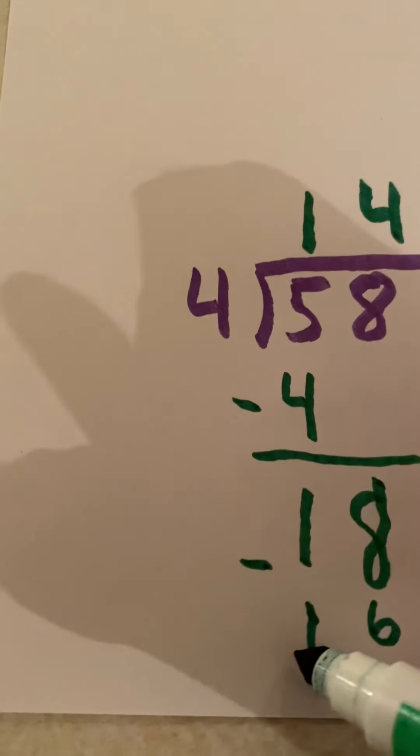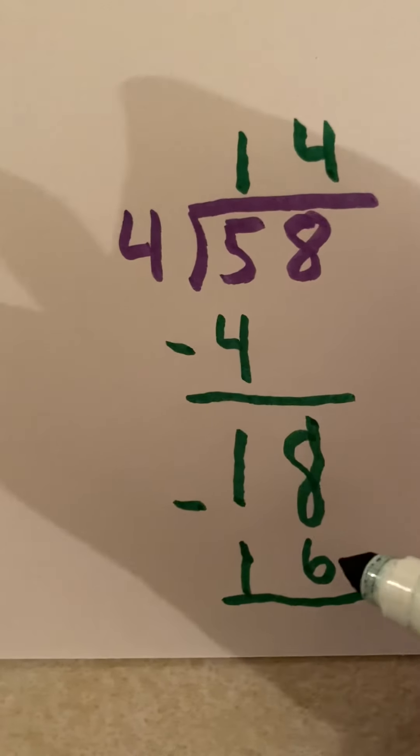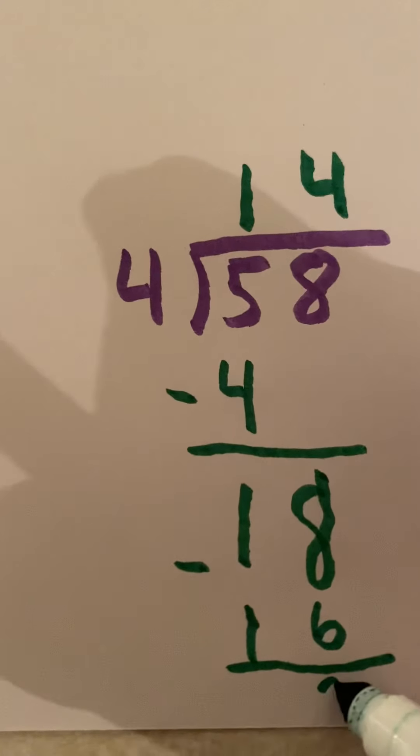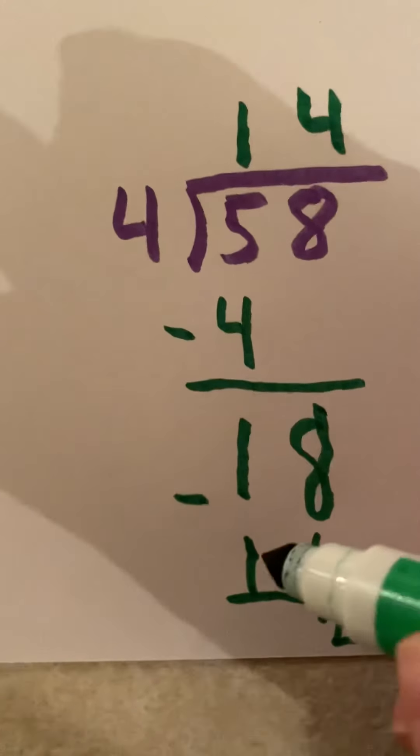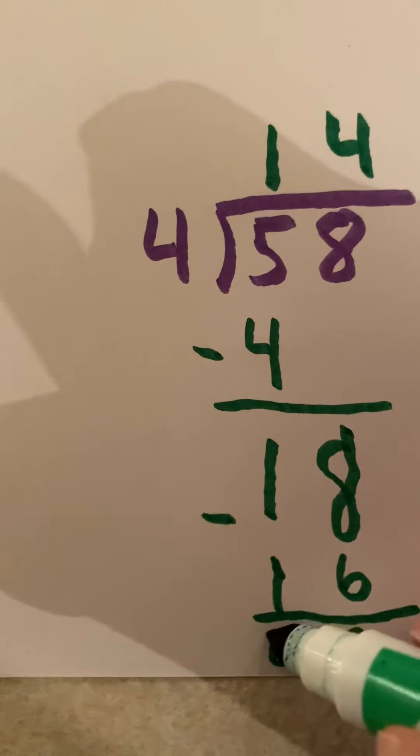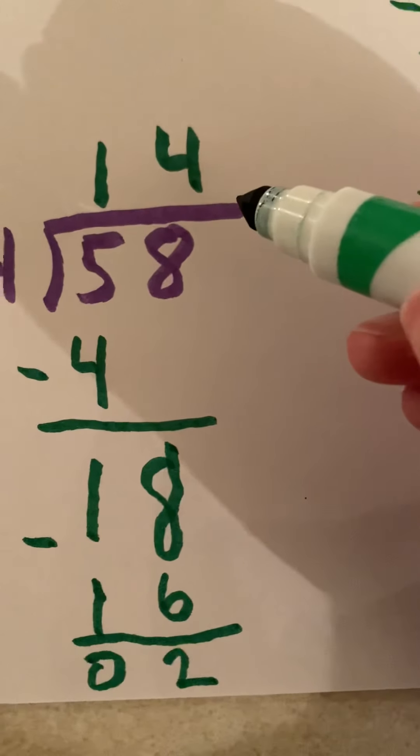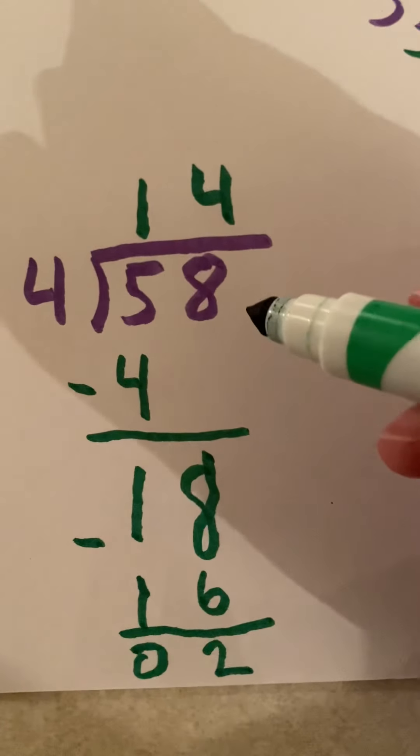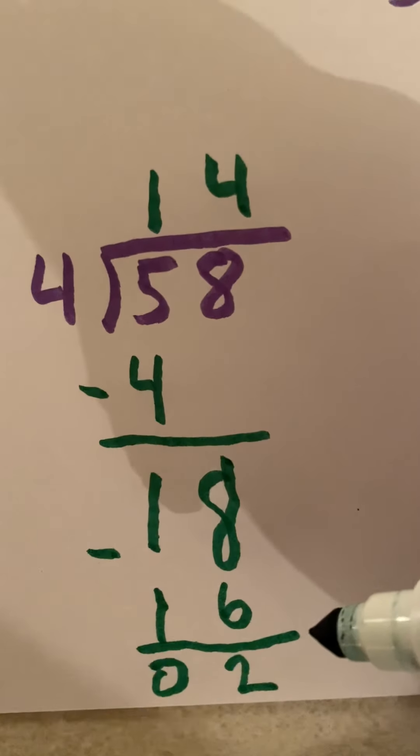And I'm going to subtract. 8 minus 6 is 2. And 1 minus 1 is 0. Now I'm ready to repeat. I can see I don't have anything else to bring down. So this must just be my remainder.